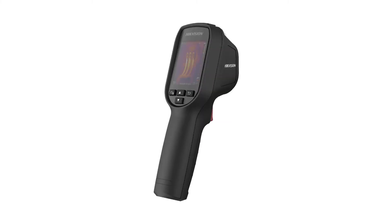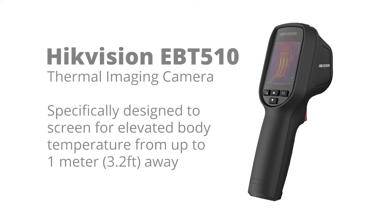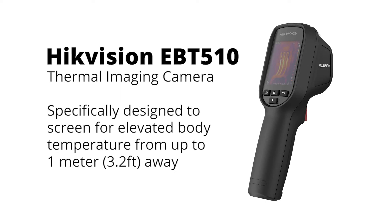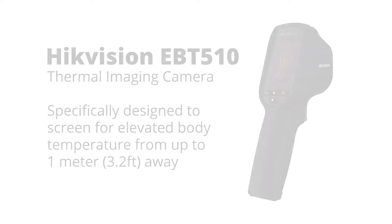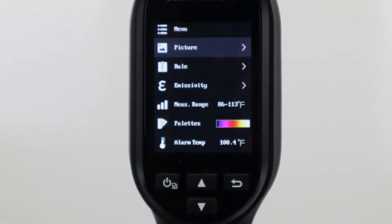The Hikvision EBT-510 has a simple menu which you can use to change a variety of camera settings like measurement units, color palette, alarm temperature, and more. To access the menu, press the power button once.